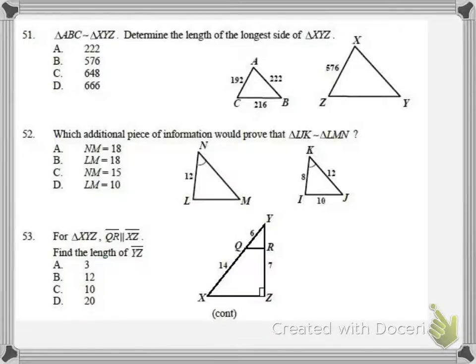Now we're going to number 51. We need to determine the longest side. They're similar, so the longest side in the first triangle is going to correspond to the longest side in the other similar triangle. If we look at them both, I go ABC, XYZ. They're facing the same direction, so the longest side in ABC is 222. That means the longest side is going to be XY in the other one.